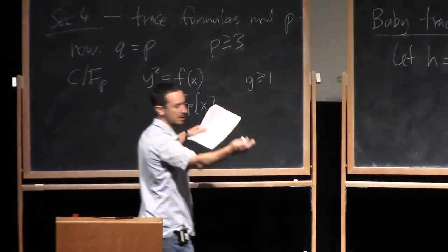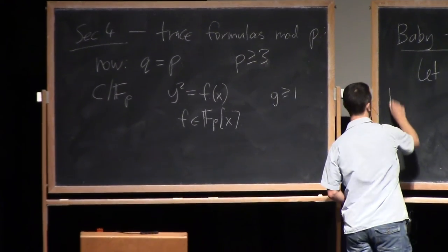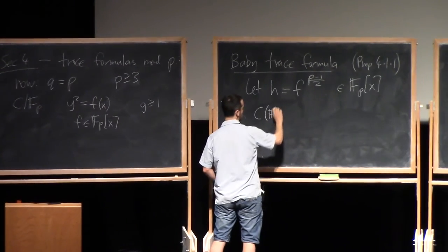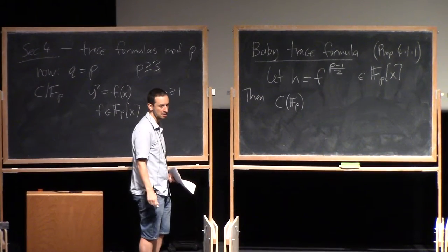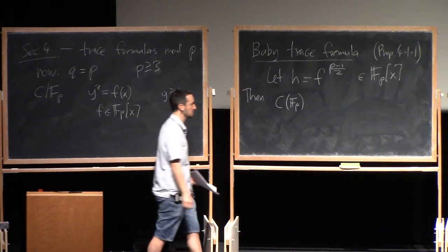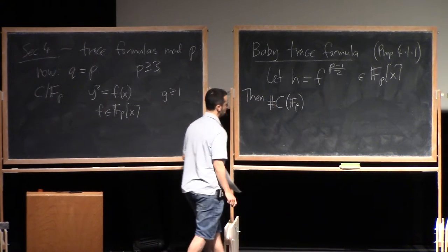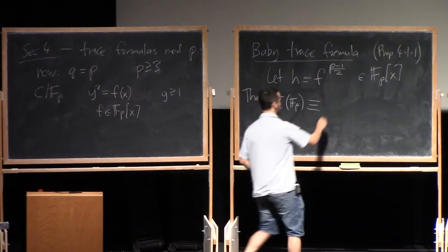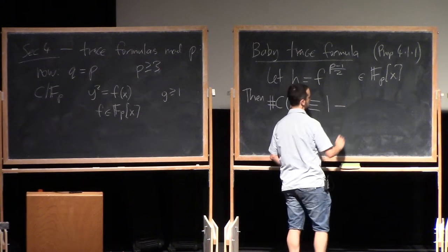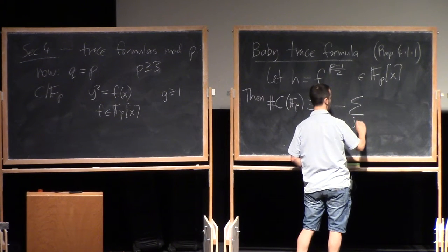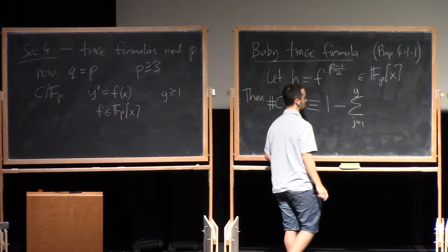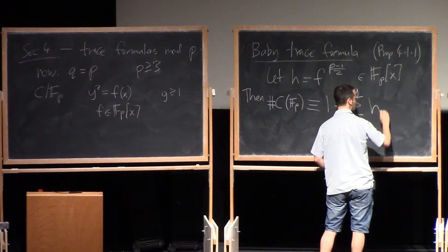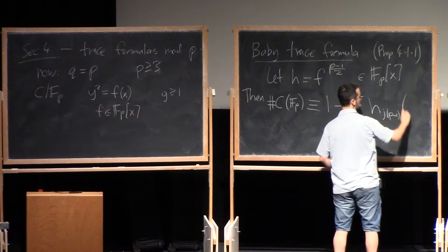Okay, but it's a bit bigger. It's got a higher degree. Then, the number of points over F_P. So not a power of P yet, just F_P. The number of points over F_P is congruent. It's not equal. It's congruent to 1 minus the sum. J is 1 to G of certain coefficients of H. H_J times P minus 1. And this is all modulo P. Okay.